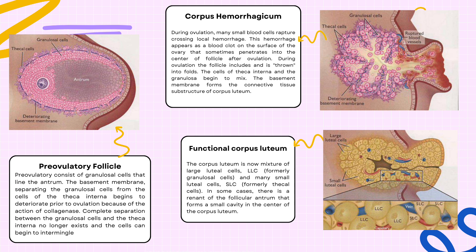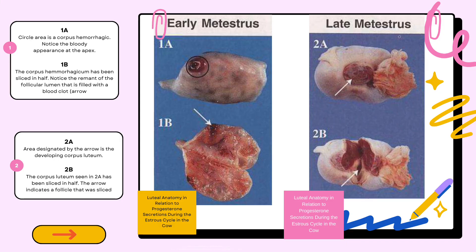The last picture in the bottom right of the screen is the corpus luteum, which is now a mixture of large luteal cells (LLC, formerly granulosa cells) and small luteal cells (SLC, formerly thecal cells). In image 1A, the circled area is a corpus hemorrhagicum. Notice the bloody appearance at the apex.